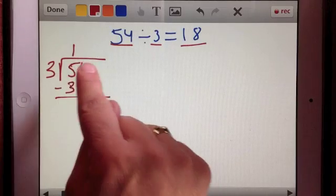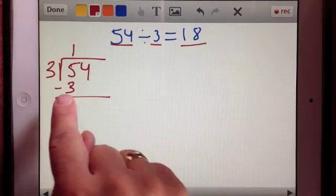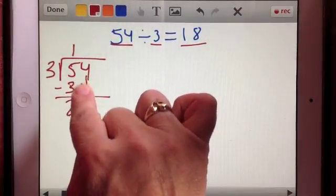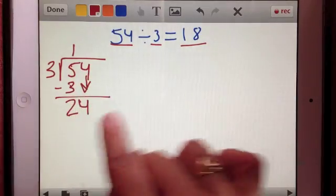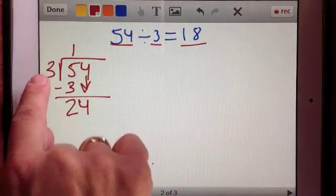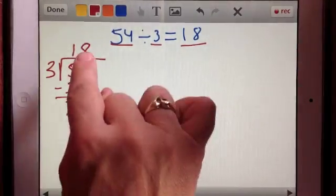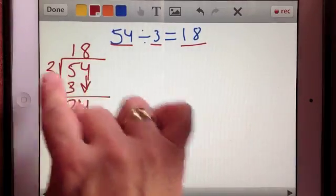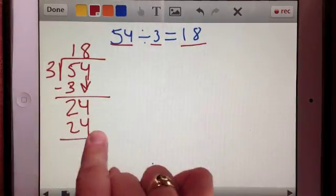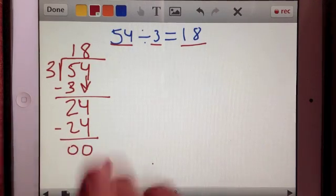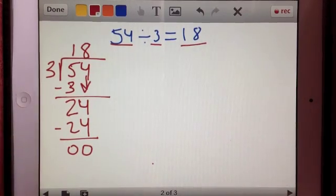And then now we subtract. Five minus three is two. Because we still have some left over, we need to now bring down the next digit, which is a four. Now we ask ourselves, how many times does three go into 24? And that would be eight times. Write that digit next to the one. Eight times three is 24. Subtract that and we get zero. And now that we know that we have zero, we know that we're done. We don't have a remainder and we don't have any more to divide.